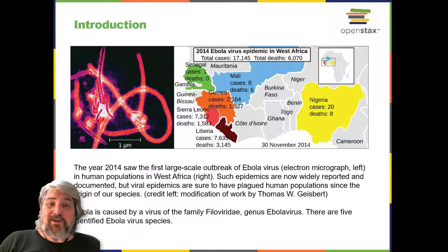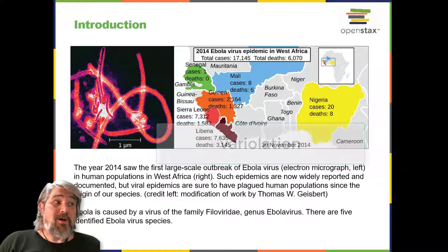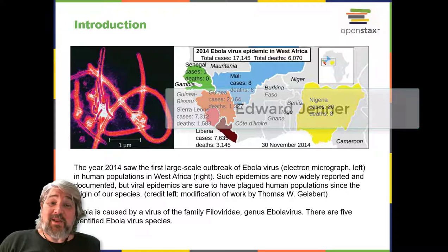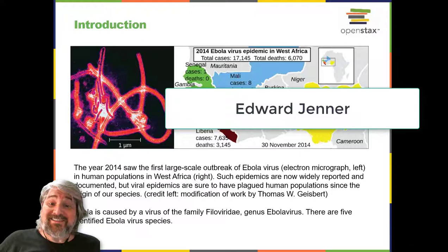Historical records suggest that by the 17th century, and perhaps earlier, inoculation, also known as variolation, was being used to prevent the viral disease smallpox in various parts of the world. By the late 18th century, Englishman Edward Jenner was inoculating patients with cowpox to prevent smallpox, a technique he coined vaccination.